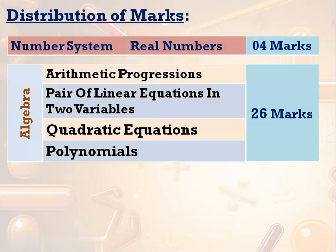The second branch is algebra. The maximum marks out of 80 go to the branch of algebra. There are 4 different chapters in algebra: arithmetic progression, pair of linear equations in two variables, quadratic equation, and polynomials. This is a very important branch — there will be one 4-mark question and sometimes two in the 4-mark section, and minimum 2 questions in the 3-mark section. That means 4+4=8 plus 6 gives us 16 marks from just the 3-mark and 4-mark sections.